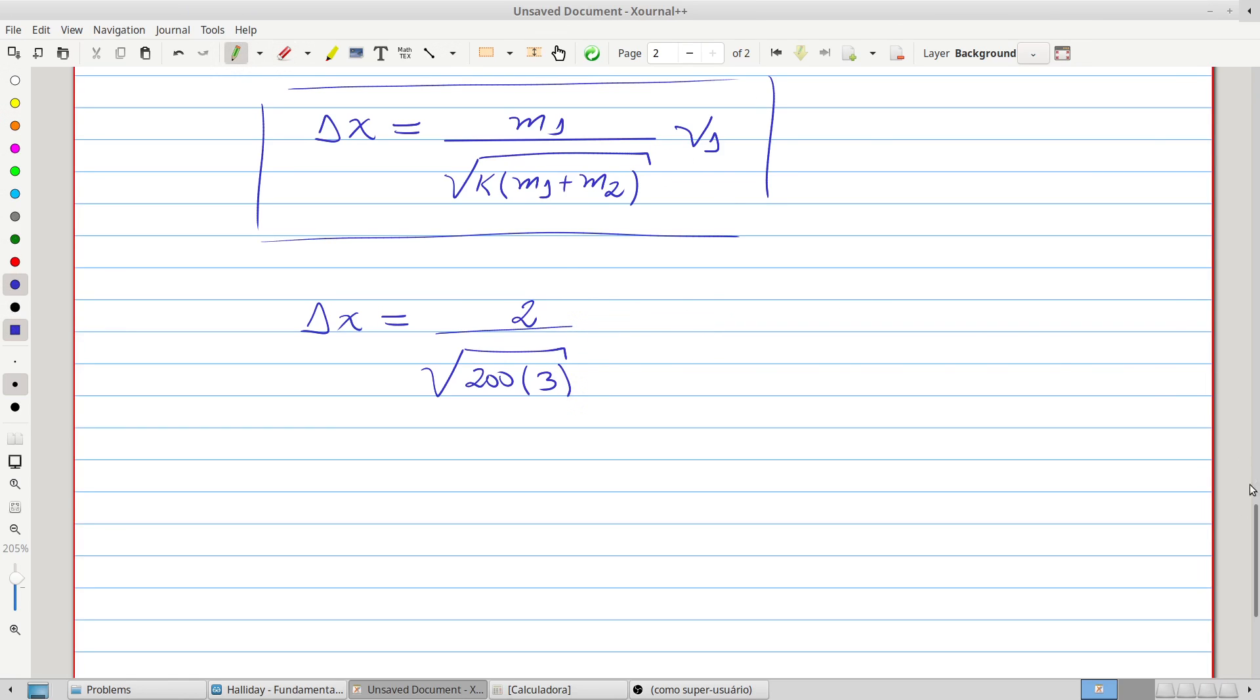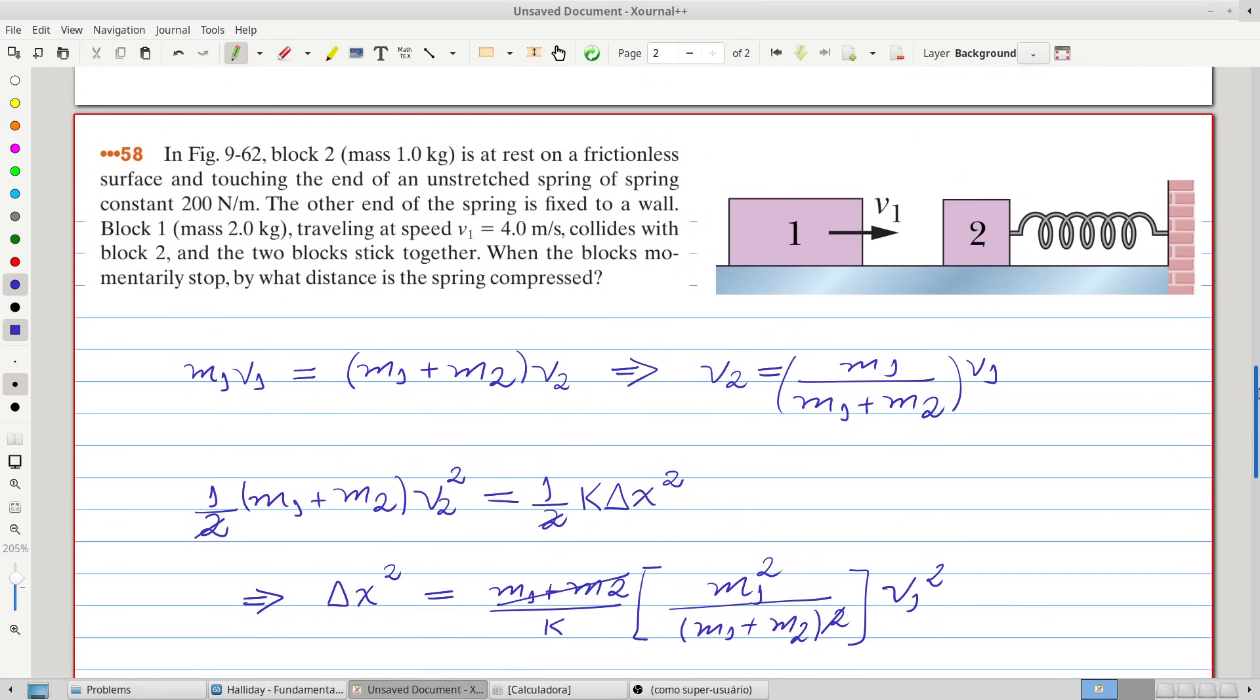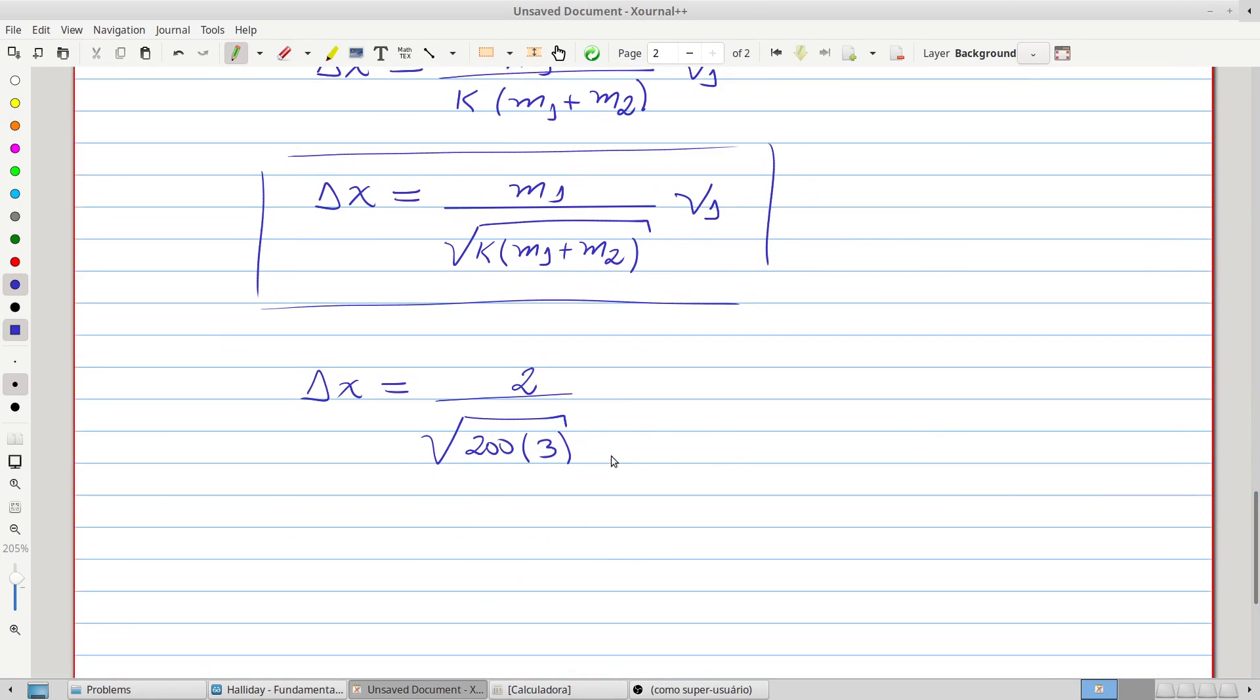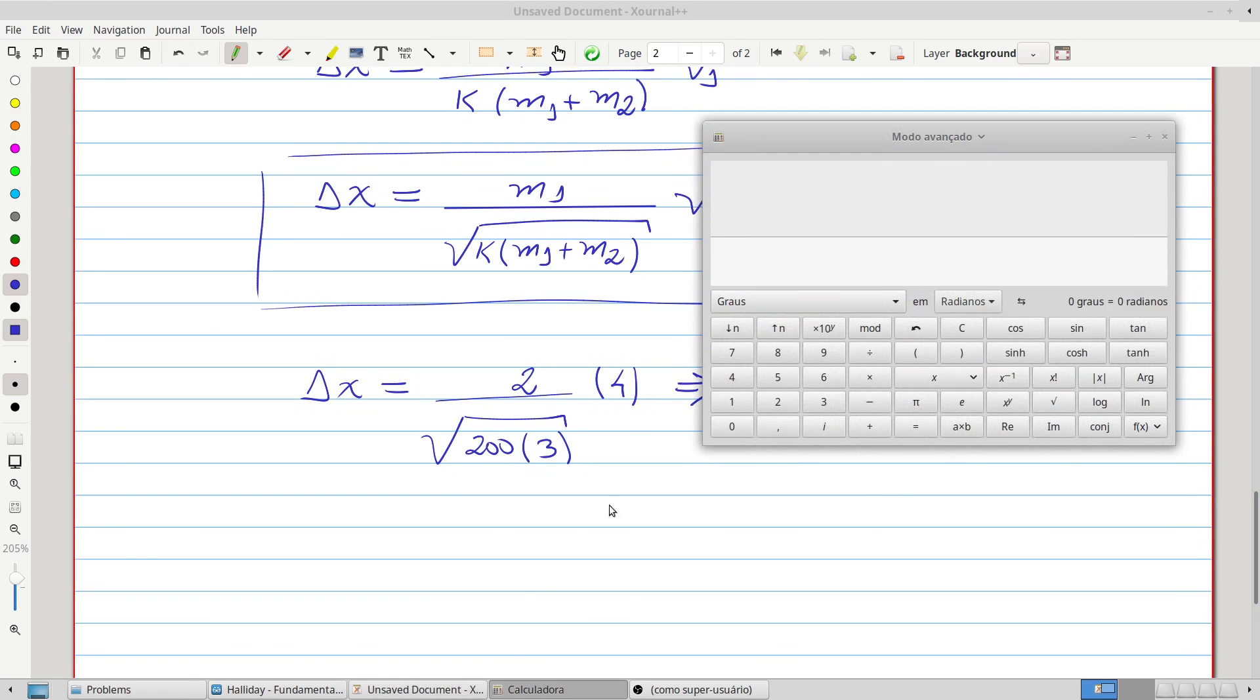multiplied by V1, V1 is 4 meters, so let's use our calculator,